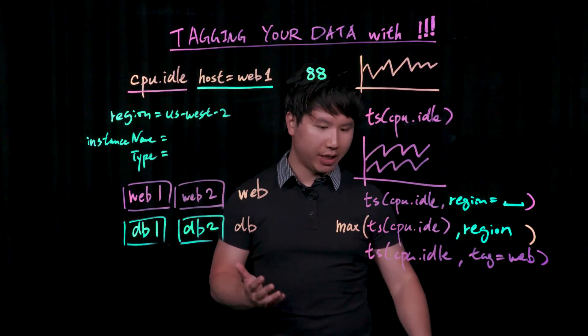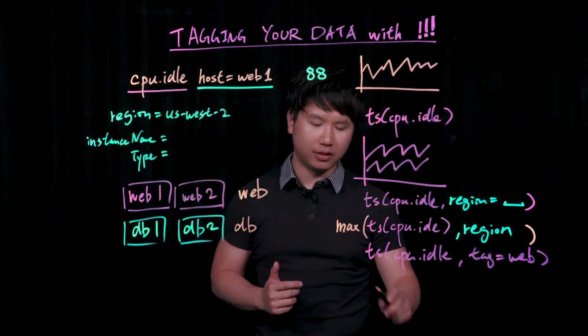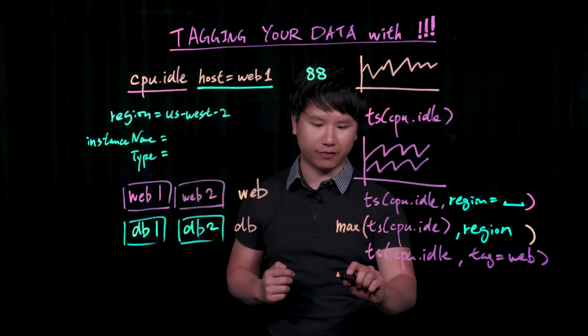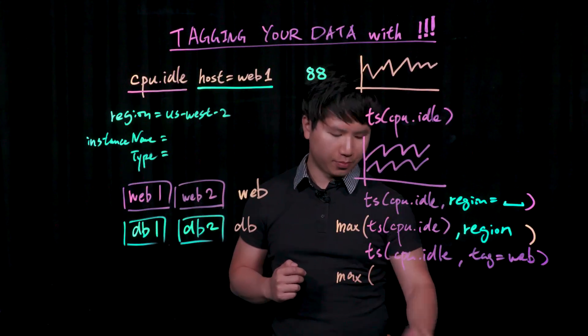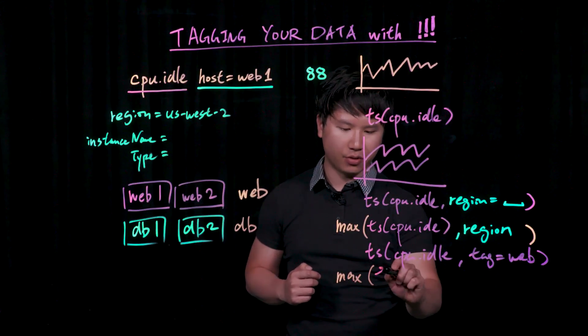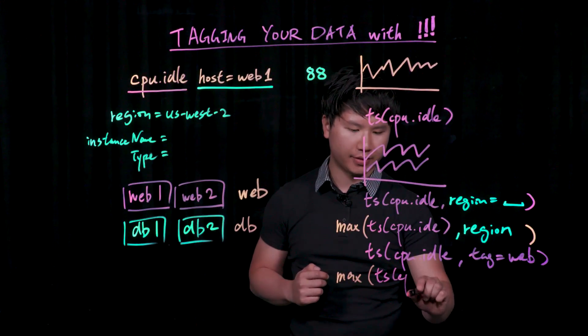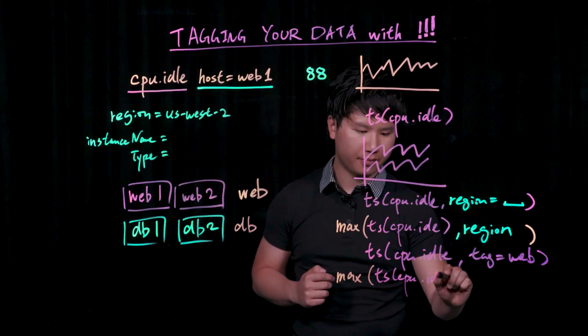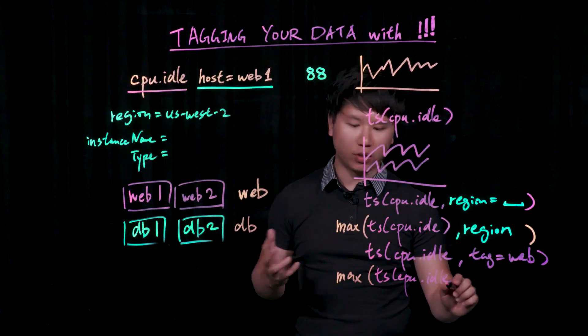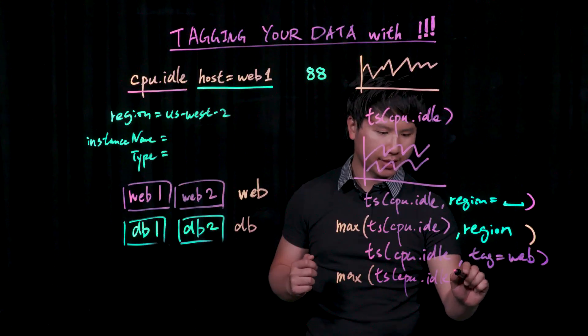Now you could actually do aggregations on top of source tags as well, using exactly the same syntax. For example, let's say you want to say, I want to pull out all of my CPU idle metrics.